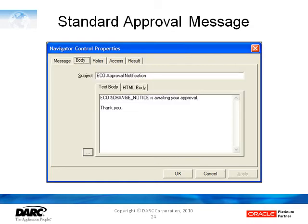This is the standard approval message. You can see in the text body section there's an ampersand change underscore notice. This is one of the fields captured by the Get ECO Attributes function, so it can be used in the notification. It's very common that people request that the ECO number is also included in the subject line, and we'll see that in our customized process.